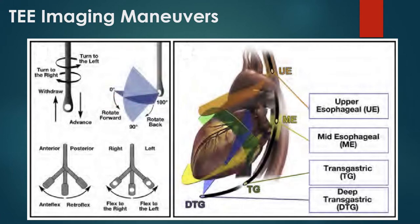The TEE probe has upper esophageal, transgastric, deep transgastric, and mid-esophageal positions. The upper esophageal position allows viewing of the aortic arch. Deep transgastric lets you look backwards through the heart and interrogate the aortic valve with Doppler. Transgastric provides a parasternal short axis equivalent for filling and contractility. Mid-esophageal views make up the majority of basic TEE work, positioned between the left atrium's anterior and posterior borders, so the left atrium is always in the near field.